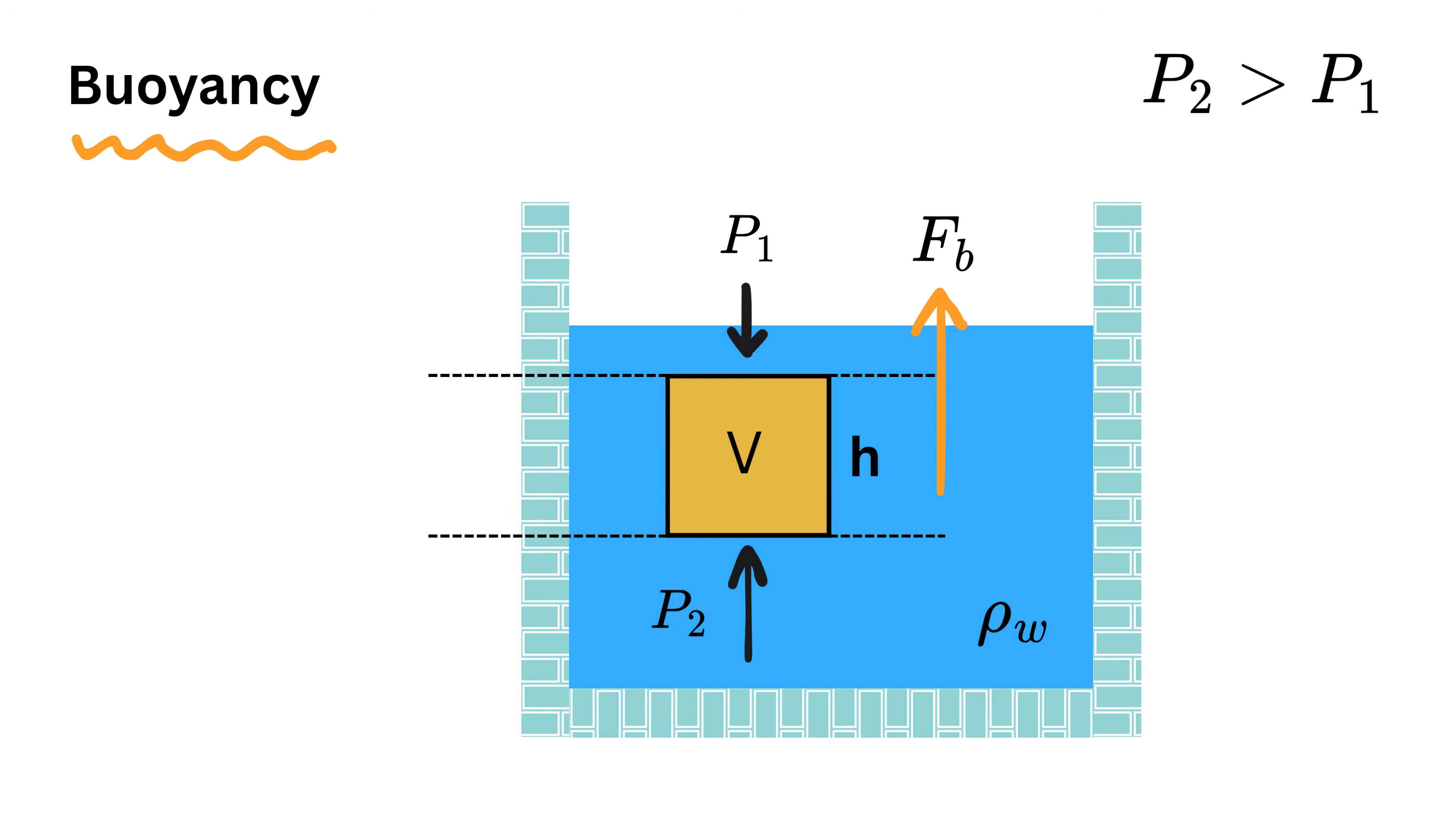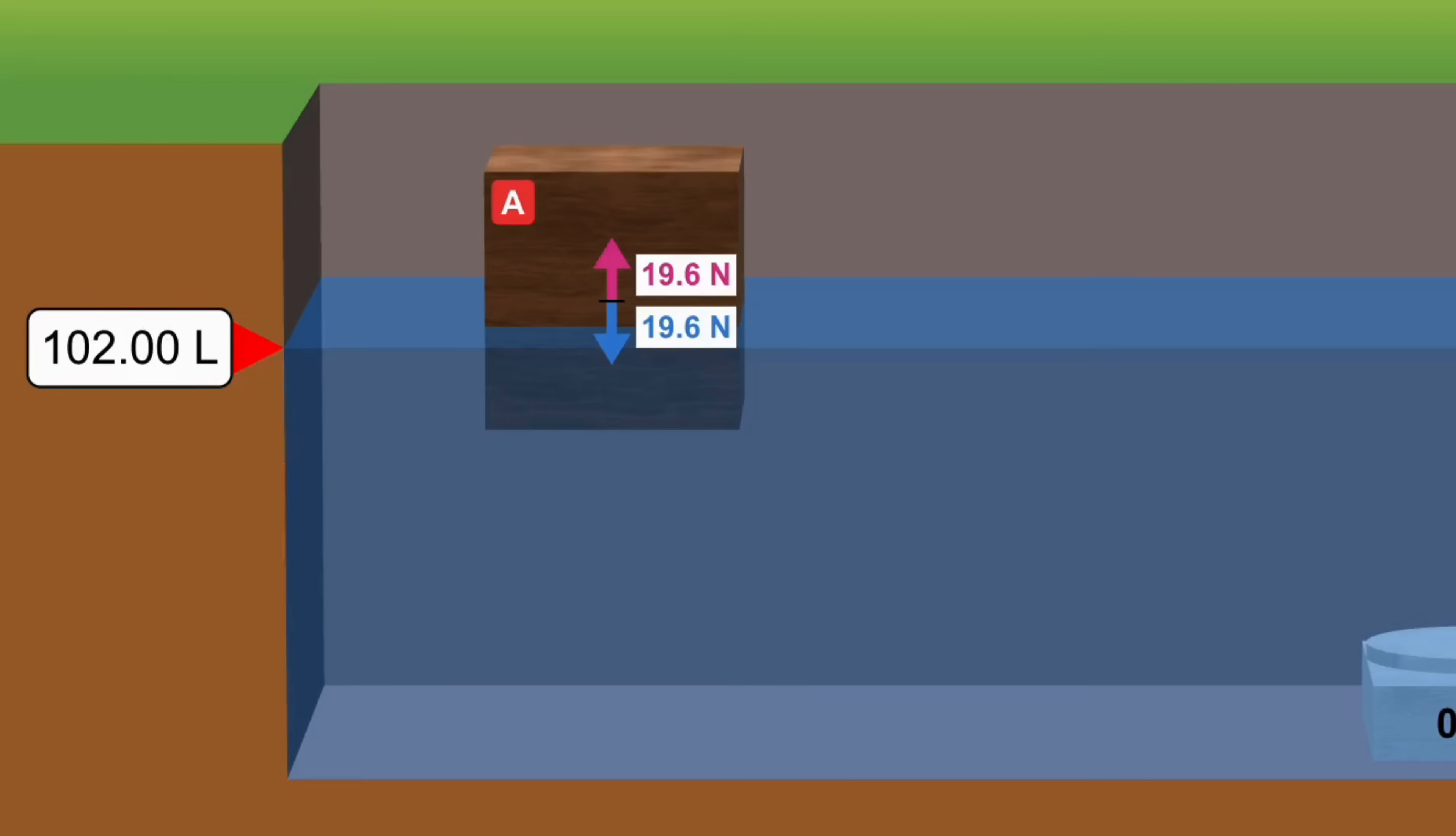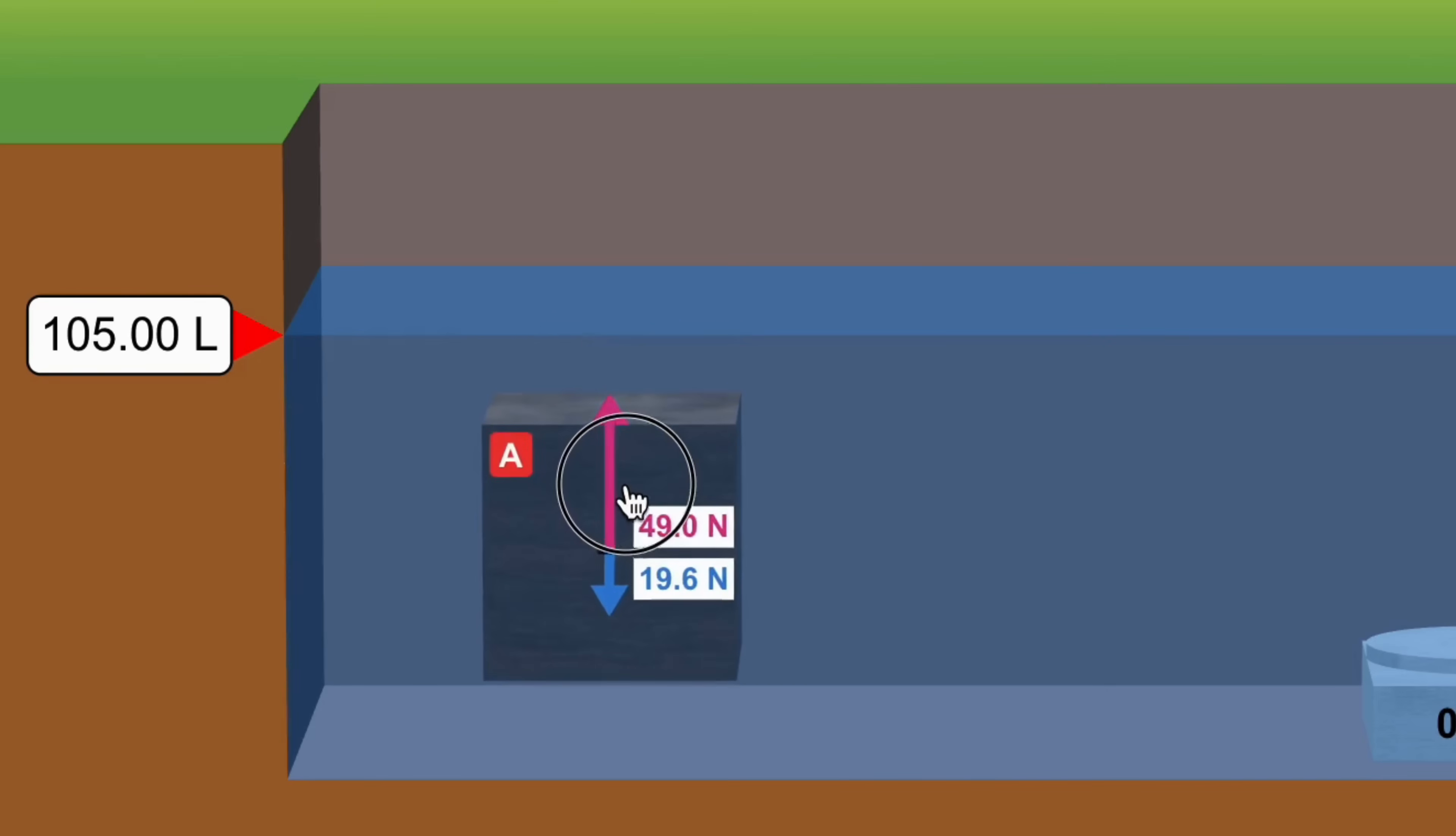Buoyant force always acts vertically upward, and it always exists whether the object sinks, floats, or remains fully submerged.